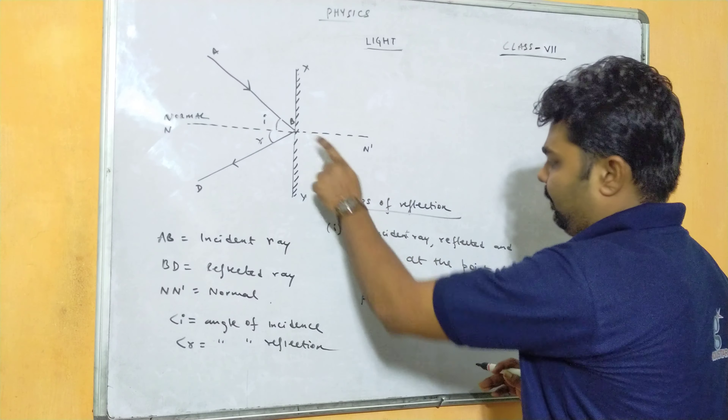For example, consider this as a dressing table. When I am standing in front of the dressing table, the distance between me and the mirror, and the mirror and the image, will be the same. The height of the image — that is my own height — in the mirror will also be the same. These are the characteristics of a plane mirror.